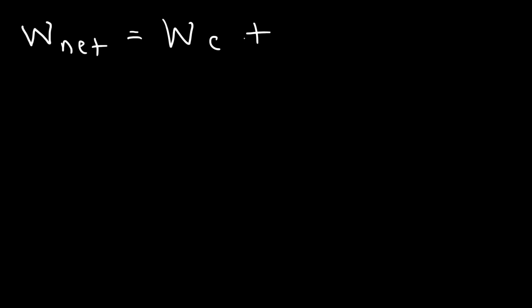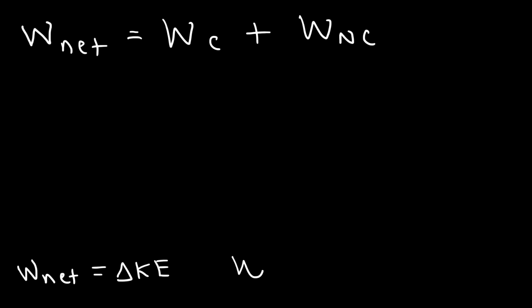Now let's go over some formulas that relate to work for conservative and non-conservative forces. The net work done on an object is the sum of the work done by all forces — the work done by the conservative forces and the work done by all the non-conservative forces. The net work done on an object is equal to the change in kinetic energy of that object. And the work done by all conservative forces is equal to the negative change in potential energy of that object.